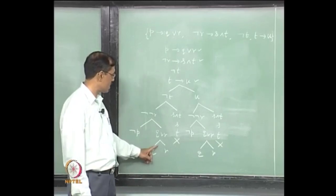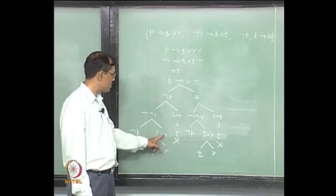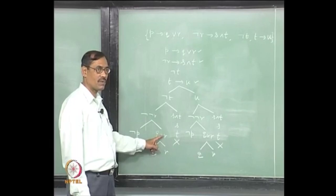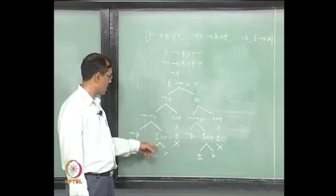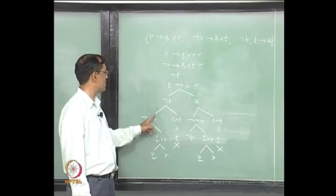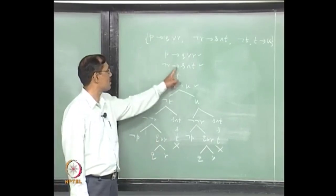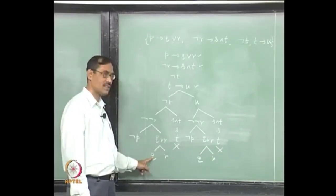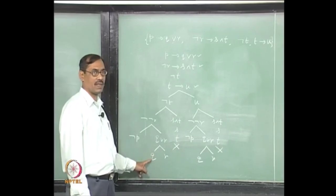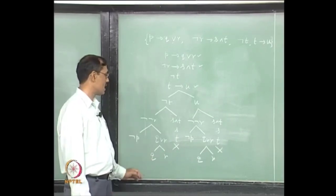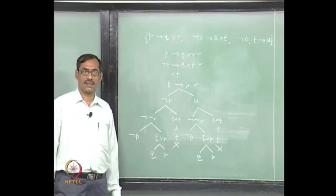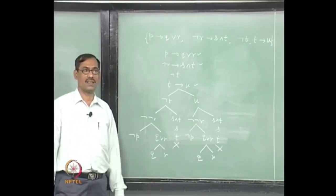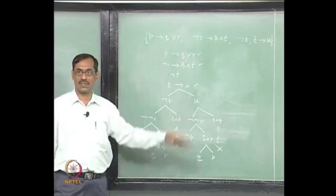If you take any other — say this one — 'Q or R' is another compound proposition; it need not be the premise, it can be obtained from another premise. On that also the rule has been applied, so that is also a completed path but an open path. So we decide that yes, it is completed but it is open. Therefore the set of propositions is consistent.